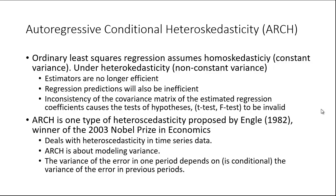ARCH is one type of heteroskedasticity proposed by Engle in 1982. He would go on in 2003 to win the Nobel Prize in Economics, and this paper appeared in Econometrica and looked at inflation rates in the UK. This deals with heteroskedasticity in time series data.